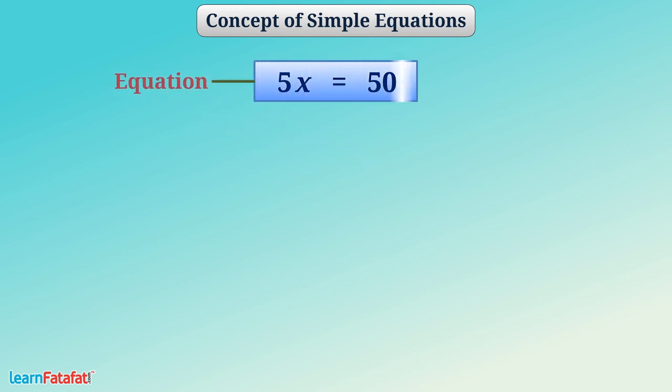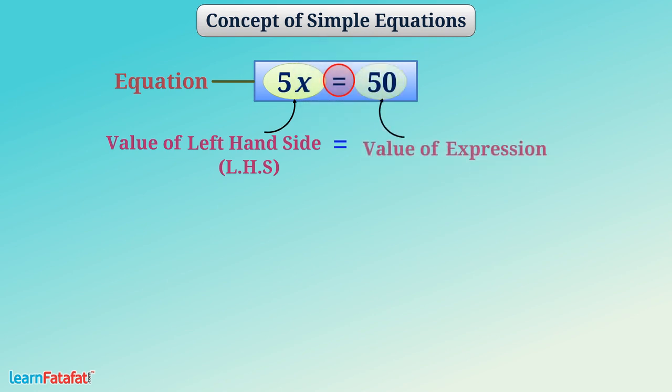In an equation, there is always an equality sign. The equality sign shows that the value of expression to the left of the sign, that is, the left-hand side or LHS, is equal to the value of expression to the right of the sign, that is, the right-hand side or RHS.